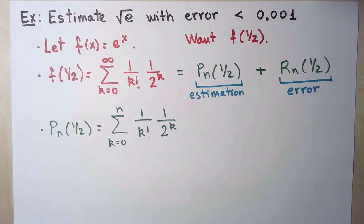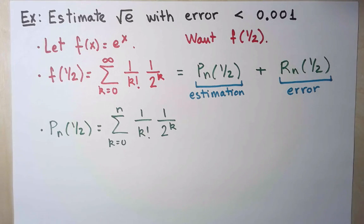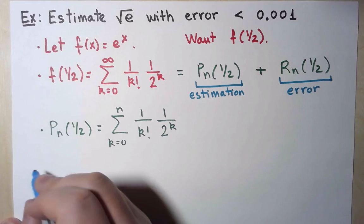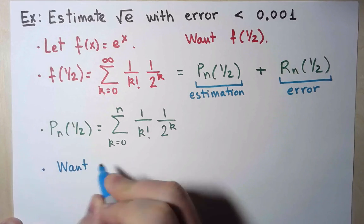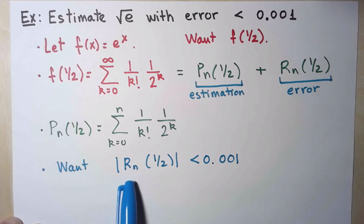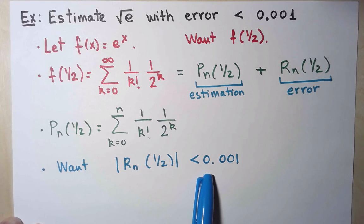But of course, the question is, which value of n do I take? Which finite sum? Where do I truncate the infinite sum? Well, the condition I have here is that the error should be smaller than 0.001. I need a way to make sure the remainder in absolute value is smaller than 0.001.